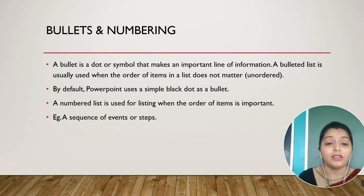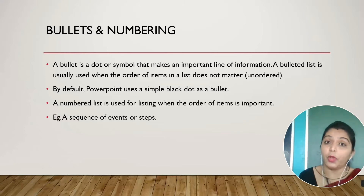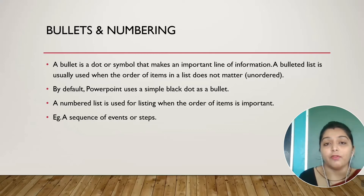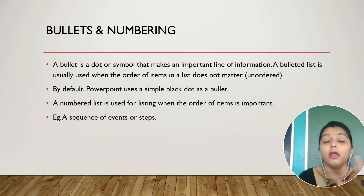For example, a sequence of events or steps. When you are writing experiments in your science, you have to write the steps one by one — first you will draw the diagram, then you will do this and all that. You have to write steps in an ordered way. For that purpose, a numbered list is used.